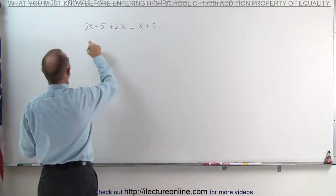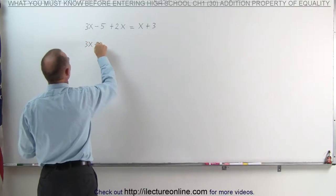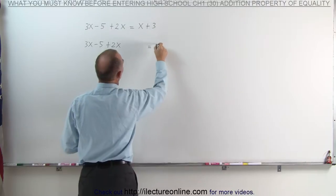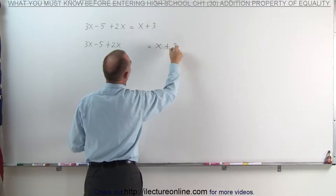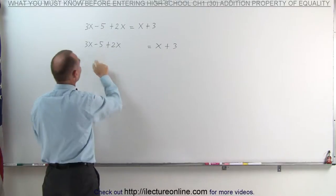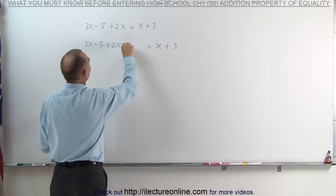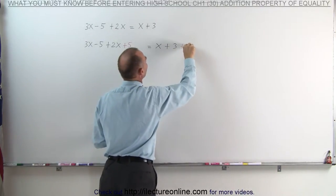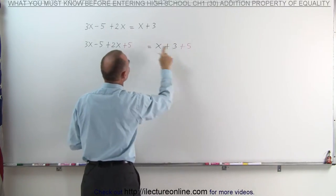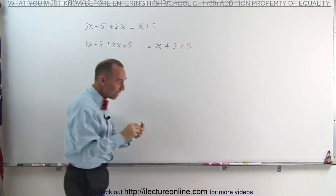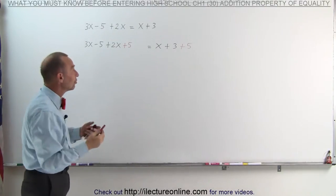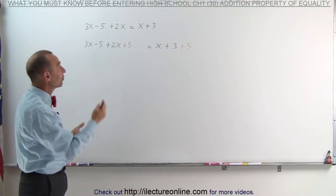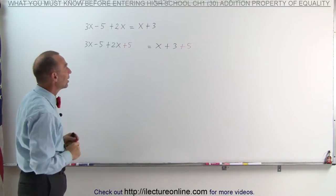So with the equation 3x minus 5 plus 2x equals x plus 3, to get rid of the negative 5, I'm going to add 5 to the left side. When I do that, I must also add 5 to the right side. If I add the same number to both sides of the equal sign, I haven't changed the equation — I kept the equation the same.